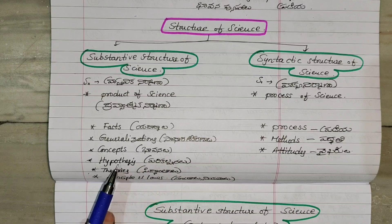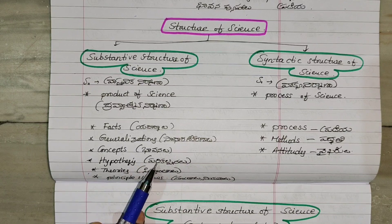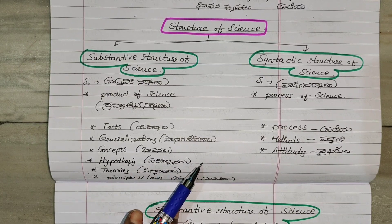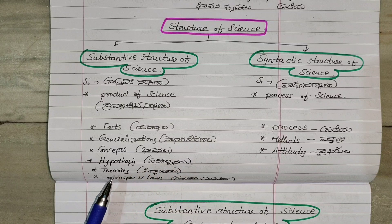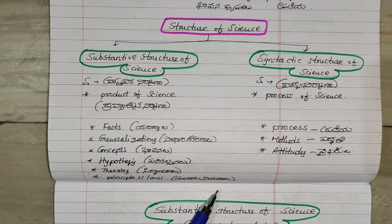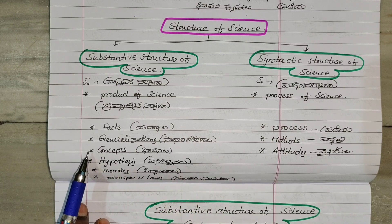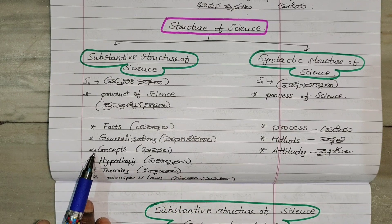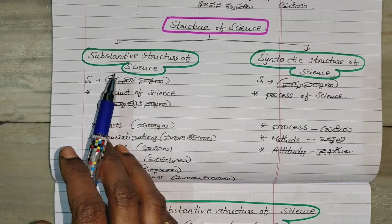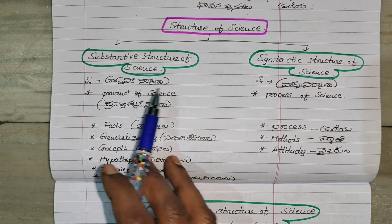Theories are Siddhanta, Principles are Sutra, and Laws are Niyama. This is what constitutes the substantive structure of science.